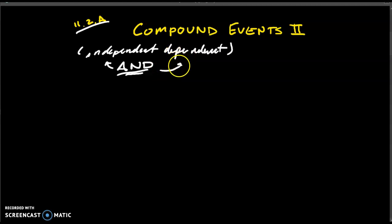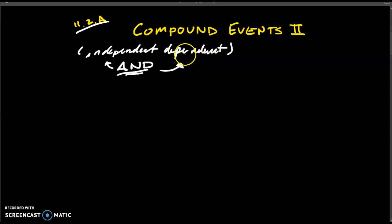Remember that dependent just means that they rely on each other, like picking cards out of a deck. Once you pick a card out of the deck, it can't be picked anymore. And independent means they don't rely on each other.